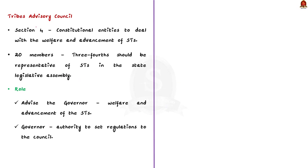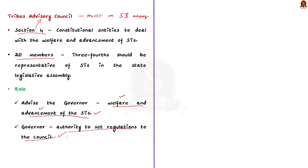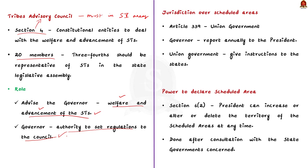Section 4 of Schedule 5 deals with the Tribes Advisory Council. A Tribes Advisory Council shall be formed in each state having scheduled areas, established as constitutional entities to deal with the welfare and advancement of scheduled tribes. The council should consist of a maximum of 20 members, of which 75% should be representatives of scheduled tribes in the respective state legislative assembly. The council's main role is to advise the governor on matters concerning the welfare and advancement of scheduled tribes. The governor has the authority to set regulations governing membership, appointment of members, and appointment of the chairman.